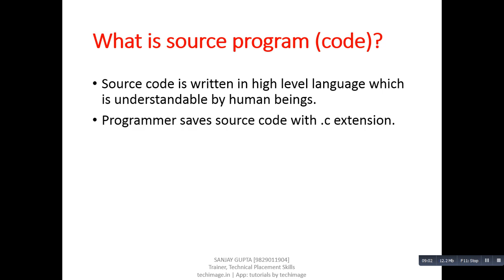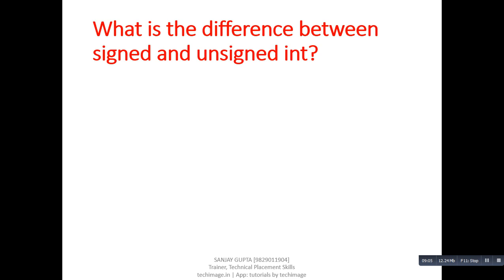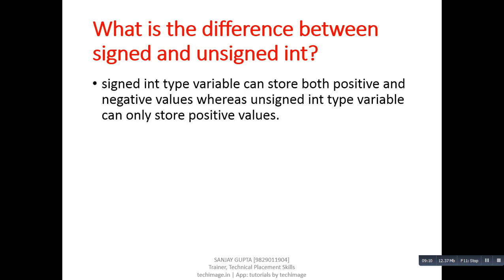Next question: what is the difference between signed and unsigned int? Answer: a signed int type variable can store both positive and negative values, whereas an unsigned int type variable can only store positive values. Thank you.